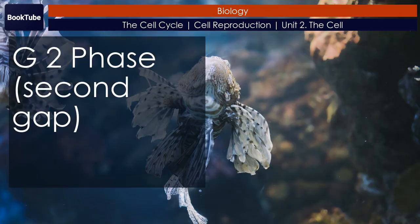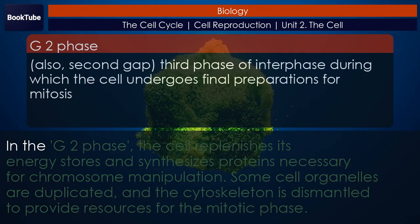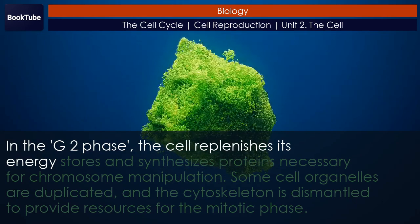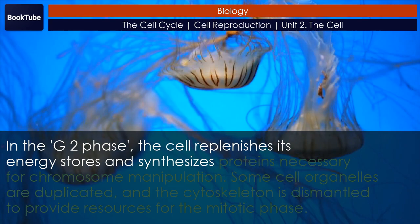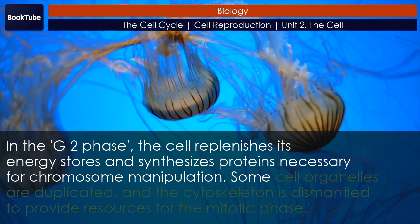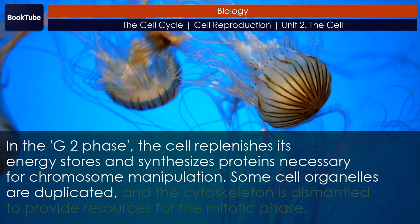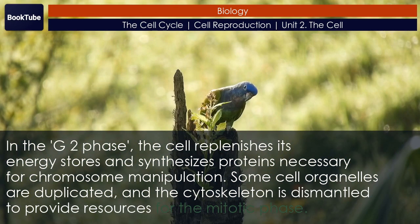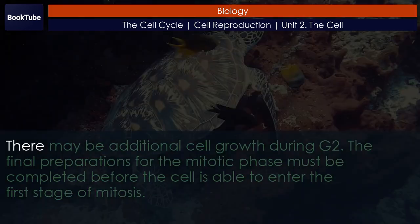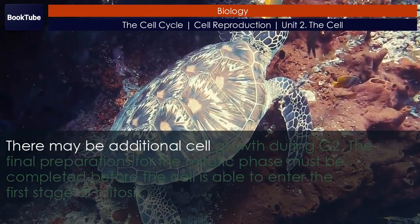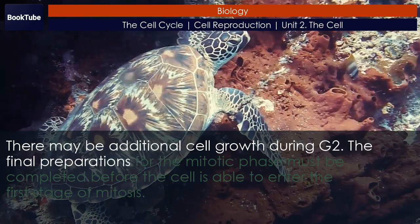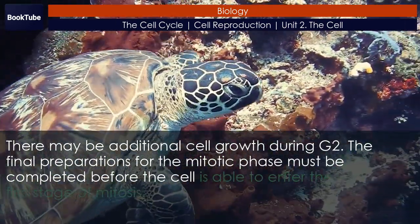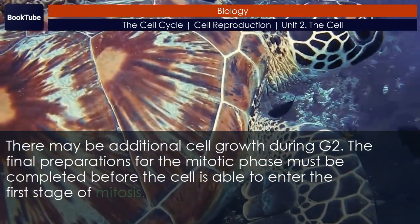G2 phase — Second gap. In the G2 phase, the cell replenishes its energy stores and synthesizes proteins necessary for chromosome manipulation. Some cell organelles are duplicated, and the cytoskeleton is dismantled to provide resources for the mitotic phase. There may be additional cell growth during G2. The final preparations for the mitotic phase must be completed before the cell is able to enter the first stage of mitosis.